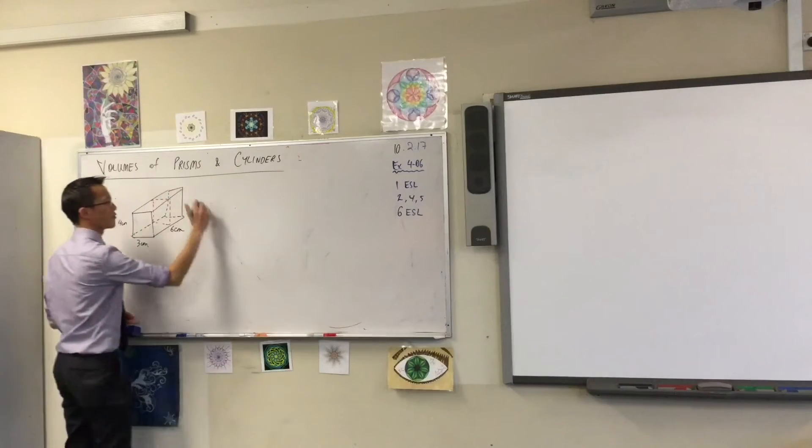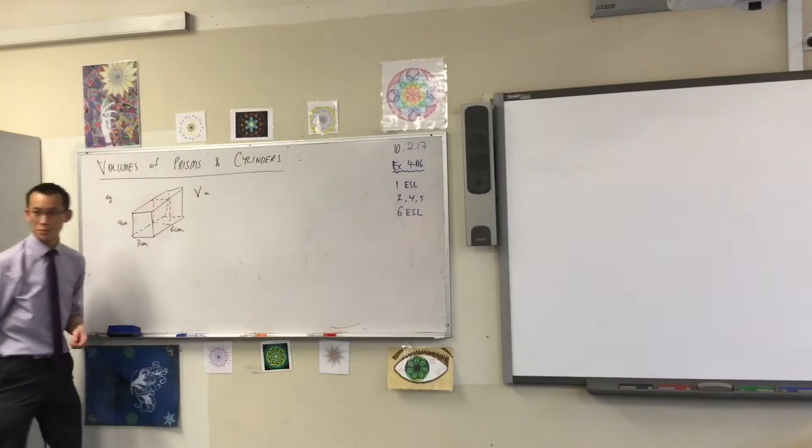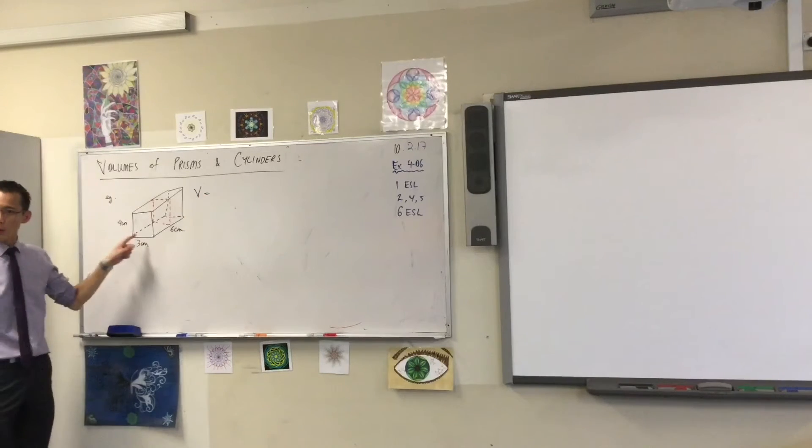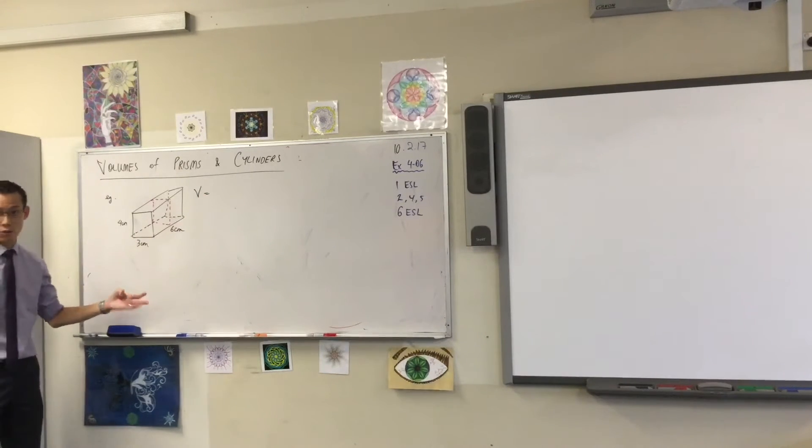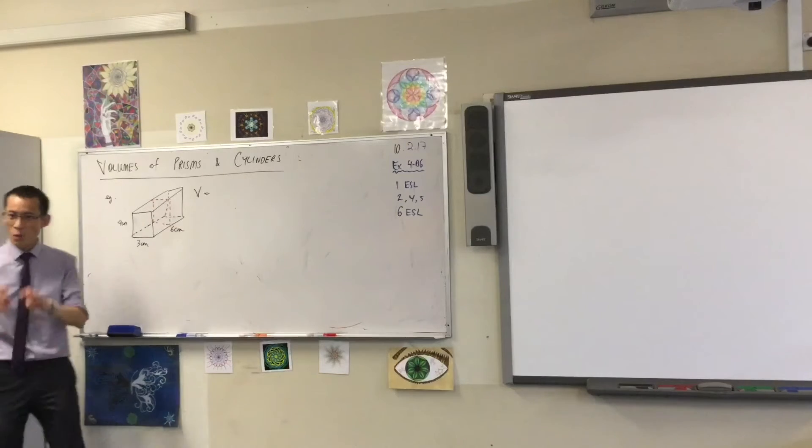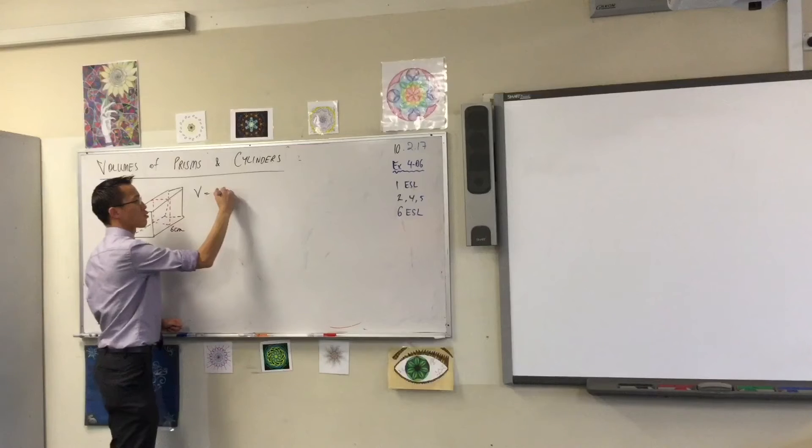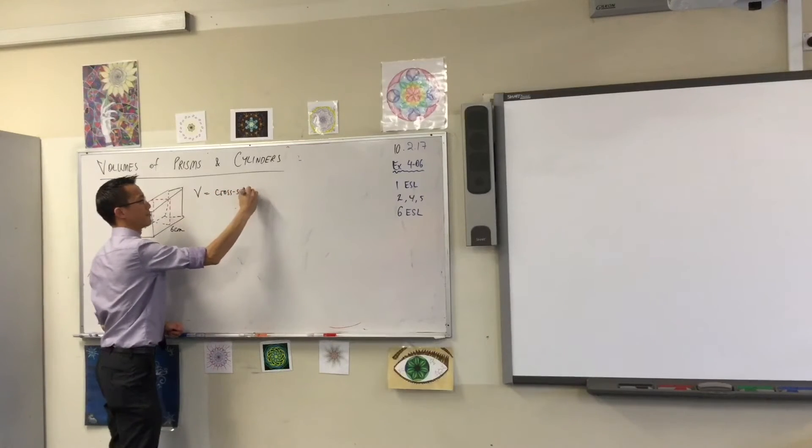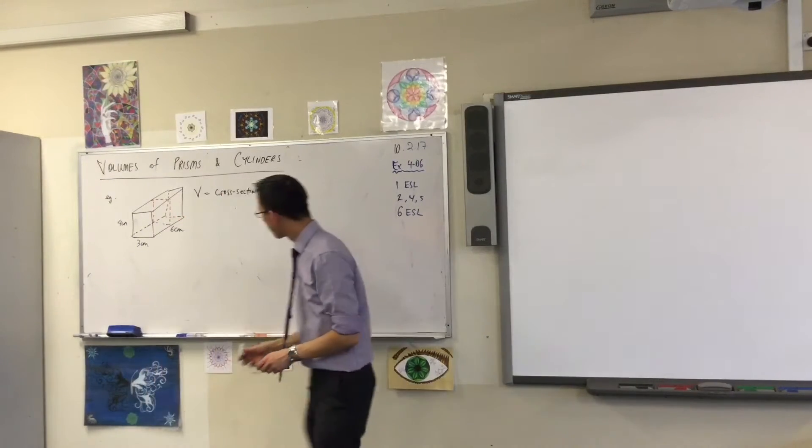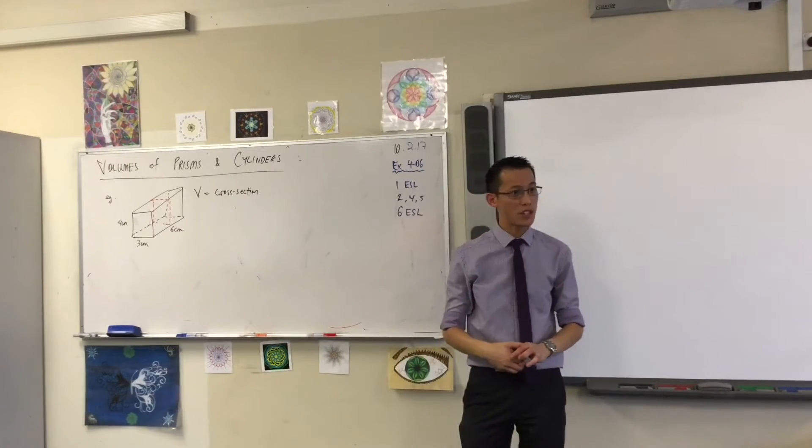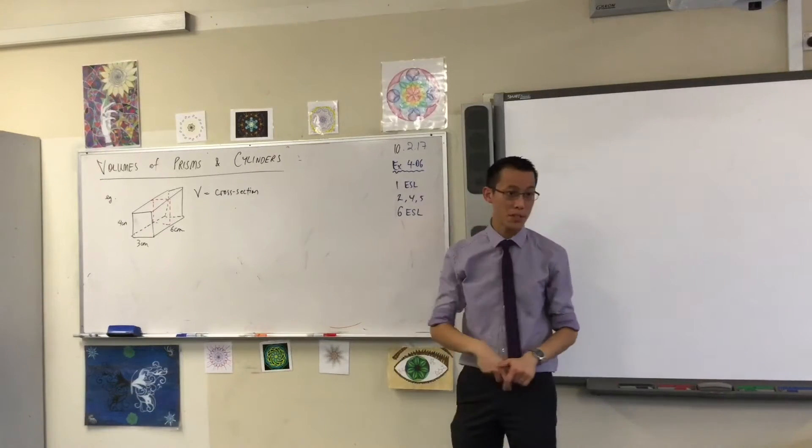So I'm going to write V equals. Now I know a lot of you can actually leap straight to the answer, or even the working required for the answer. But I want to note for you that there are these two components. There's the cross section. That area, that's the first place you've got to start. That's what makes the prism a prism.